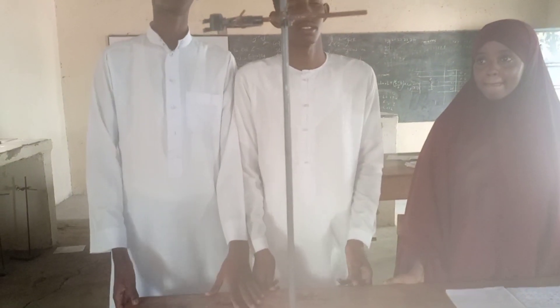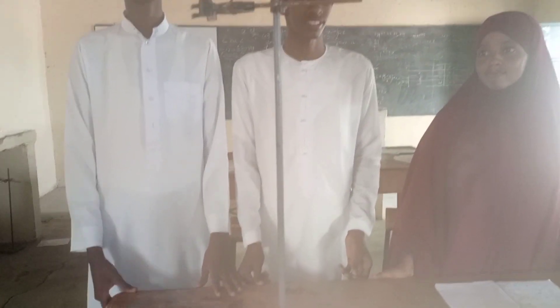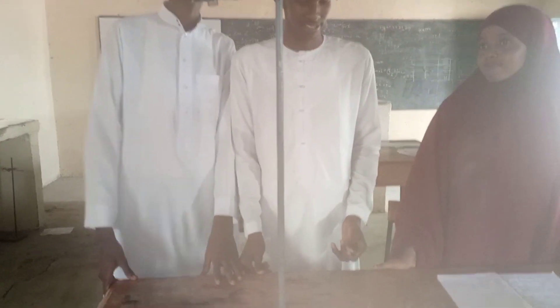Here we have a conical flask, and this is a pipette — as you can see, the pipette measures 25 ml. Here we have a burette which usually measures 50 ml, running from 0 to 50 ml, and here we have a complete stand which will be used to hold the burette.